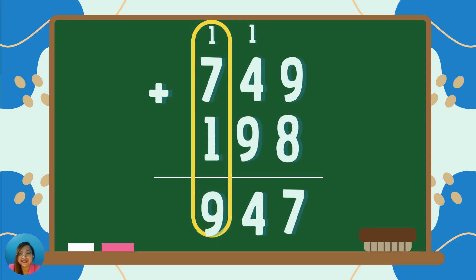Very good! It's equal to 9. So, we have 749 plus 198 is equal to 947.